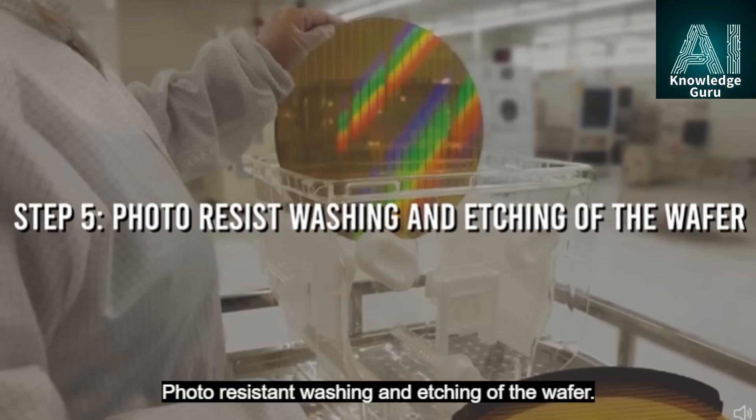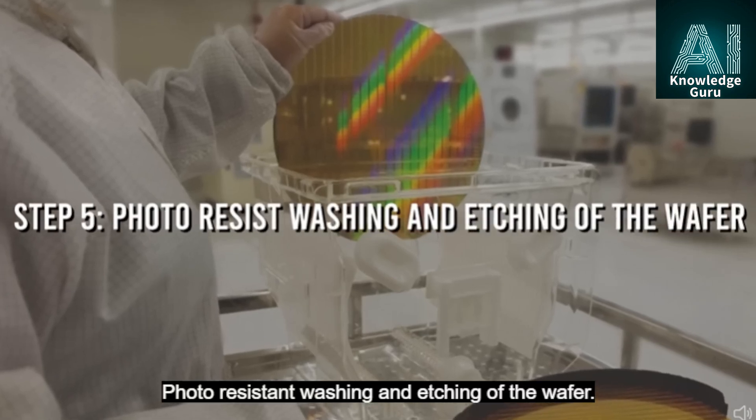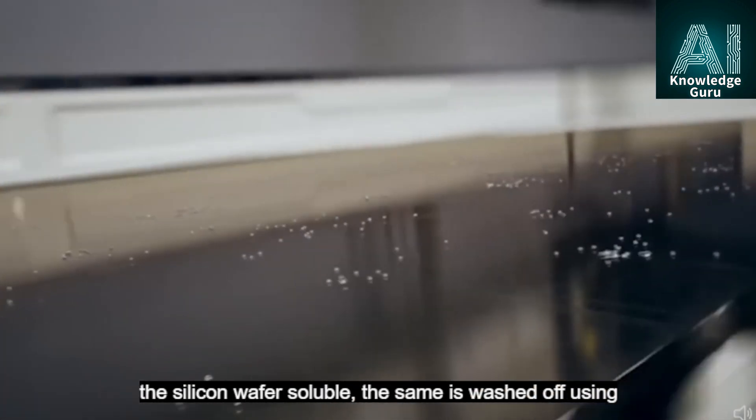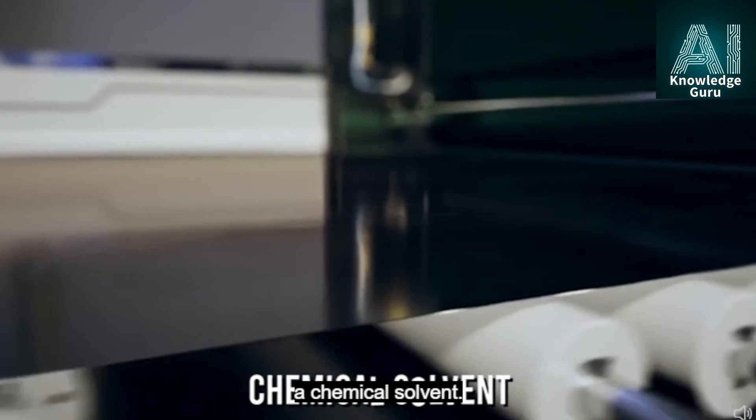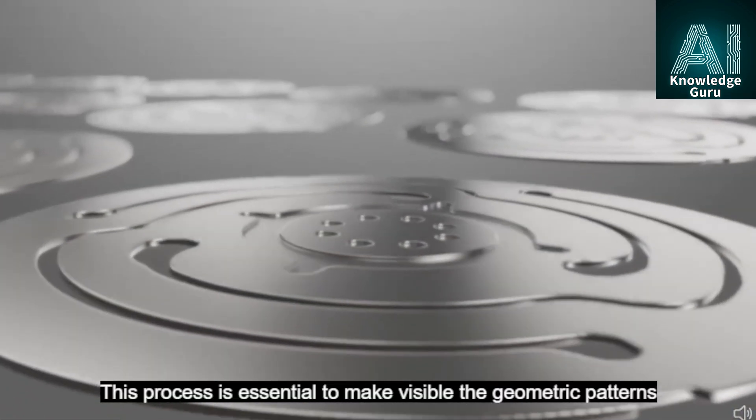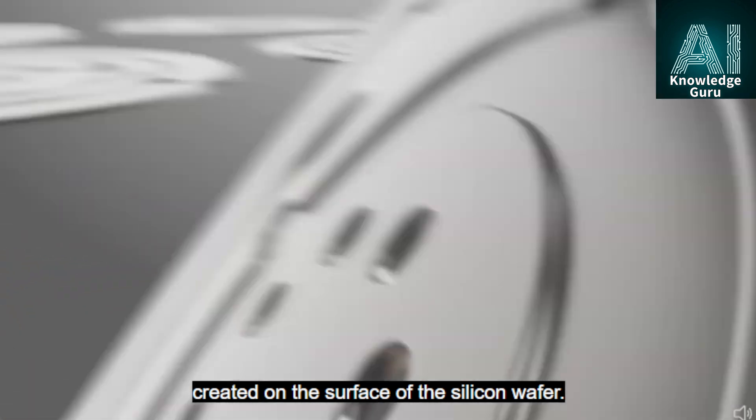Step 5: Photo-resistant washing and etching of the wafer. While the exposure to UV light makes the material of the silicon wafer soluble, the same is washed off using a chemical solvent. This process is essential to make visible the geometric patterns created on the surface of the silicon wafer.